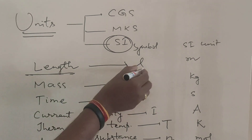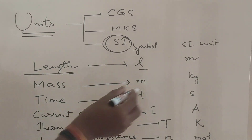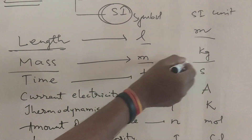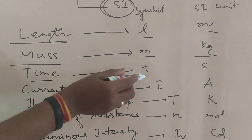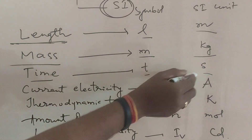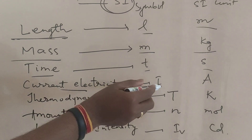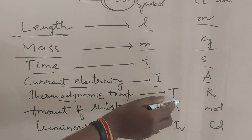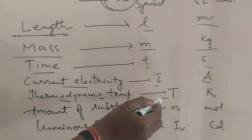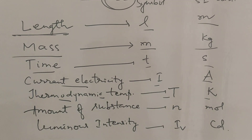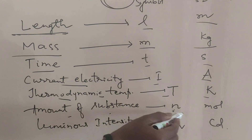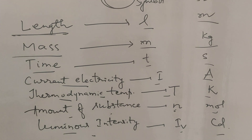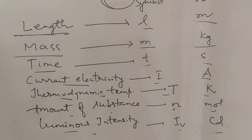The seven SI base units are: length (symbol L, unit meter), mass (symbol M, unit kg), time (symbol T, unit second), electric current (symbol I, unit ampere), thermodynamic temperature (symbol T, unit Kelvin), amount of substance (symbol N, unit mol), and luminous intensity (symbol IV, unit candela).